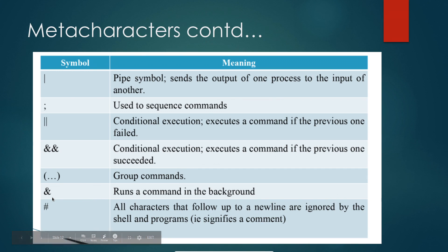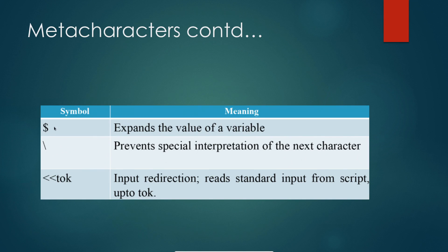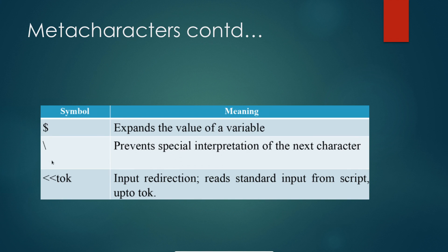Hash '#' means all characters following it up to a new line are ignored by the shell — it is used for comments. The dollar sign '$' expands the value of a variable; similar to how you use '%d' as a format specifier in C's printf, here you use '$' to print a variable in shell scripts. The backslash '\' prevents special interpretation of the next character, acting as an escape sequence, and '\t' represents a tab space.